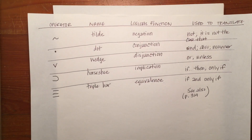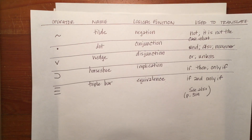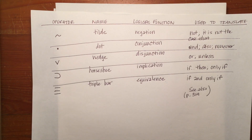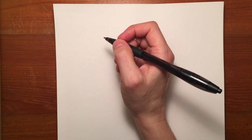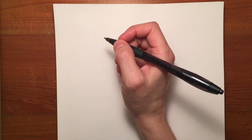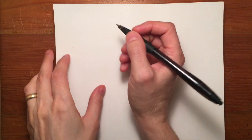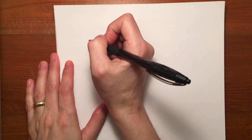Now that you've learned all of the operators, their names, their logical functions, and what they're used to translate in propositional logic, the next big thing we're going to learn is how to construct truth tables. We'll first do truth tables for propositions in this video, and then in another video we'll look at truth tables for arguments. Along the way, we will learn the very specific truth functions of the logical operators, or the rules that we need to use to construct truth tables.